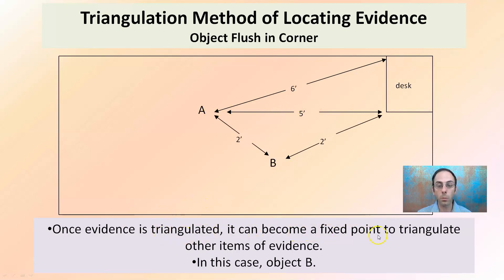Once evidence is triangulated, it can be a fixed point to triangulate other items from. So if evidence A was here to evidence B, we can work also from that fixed point to this fixed point. In this case, object B.